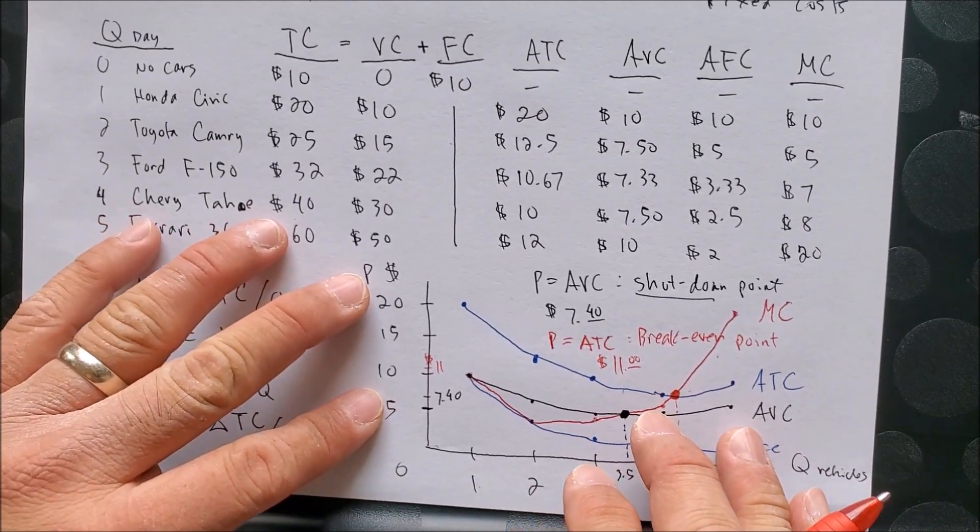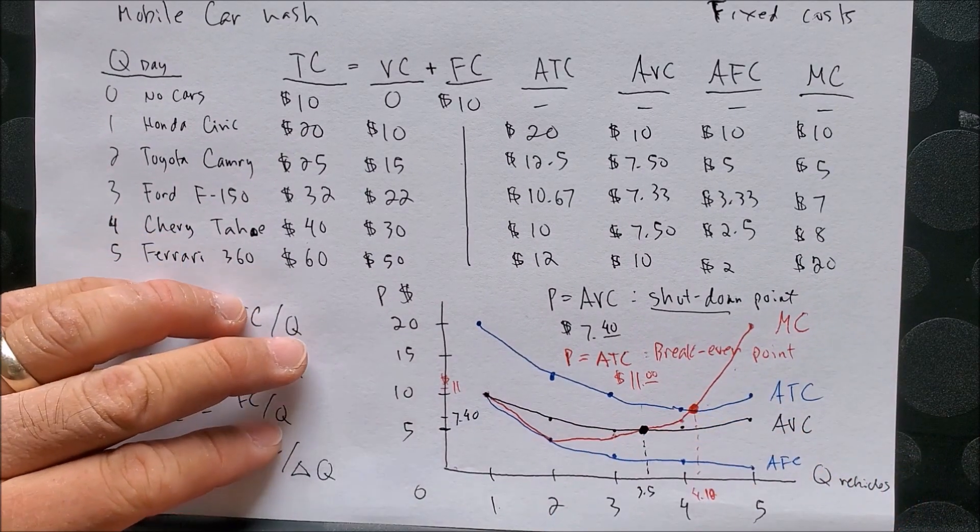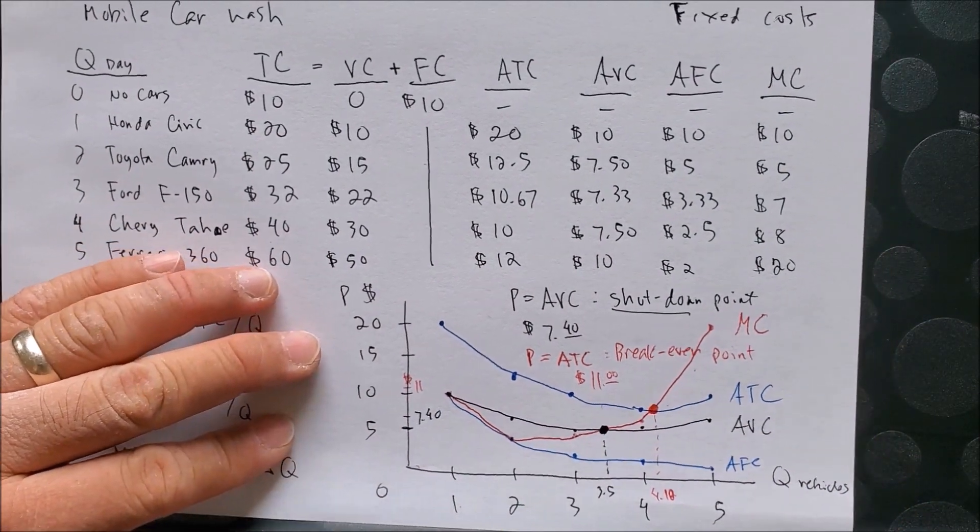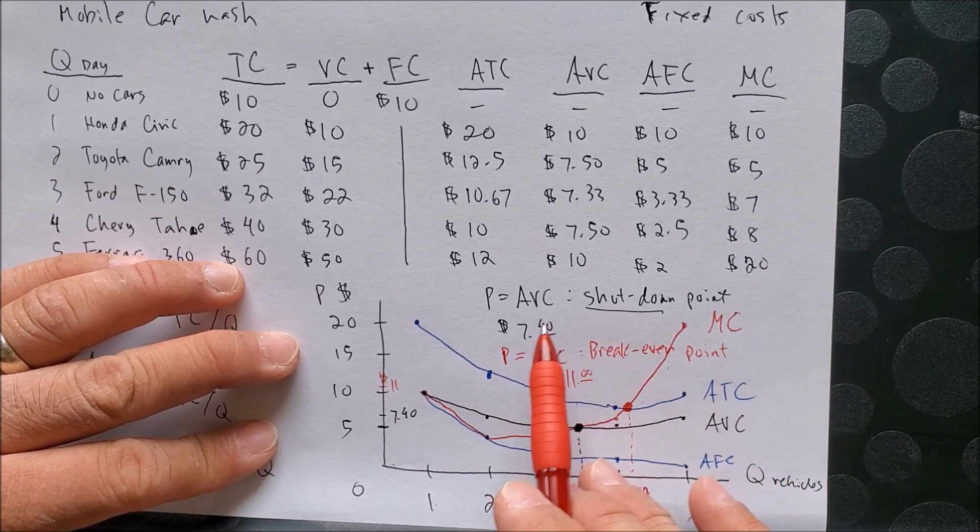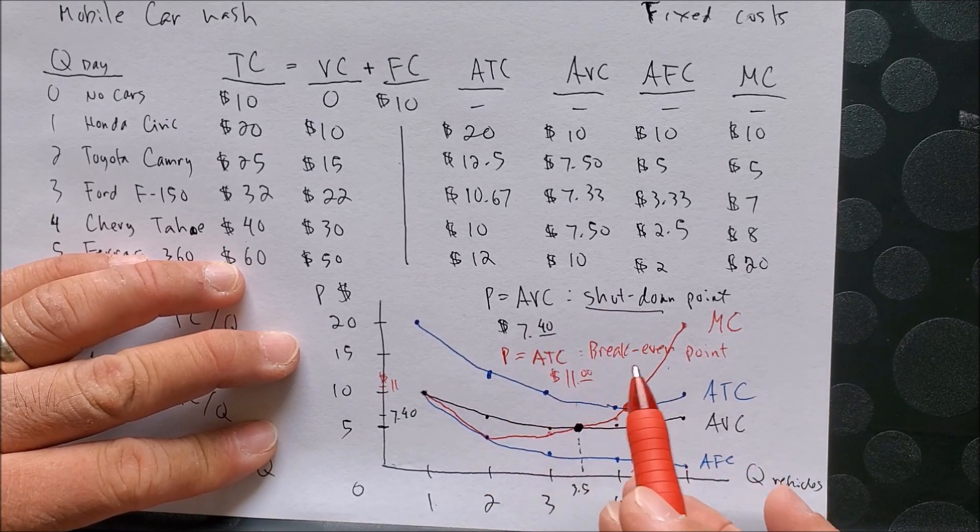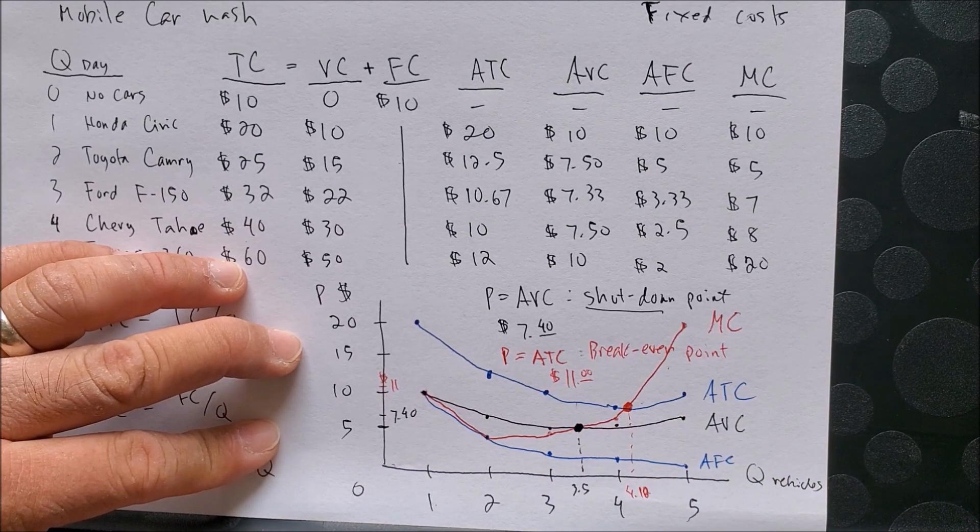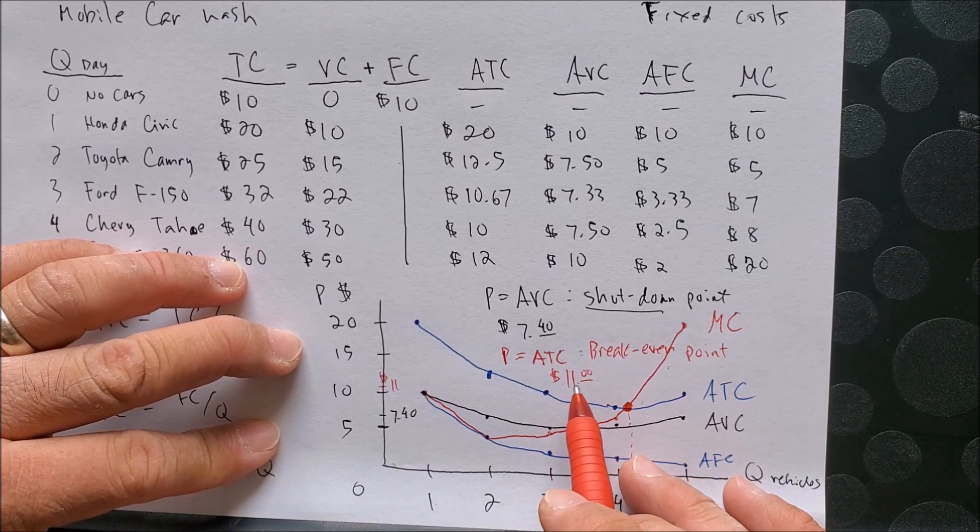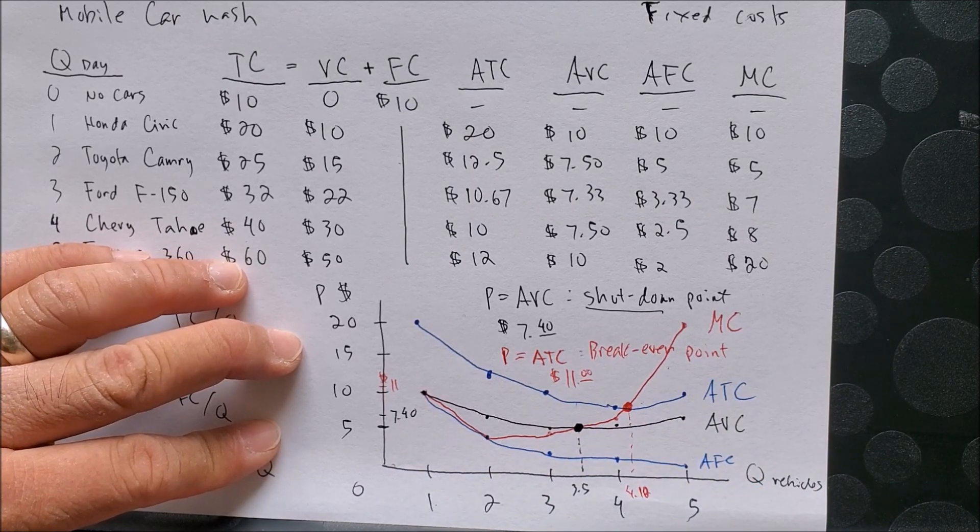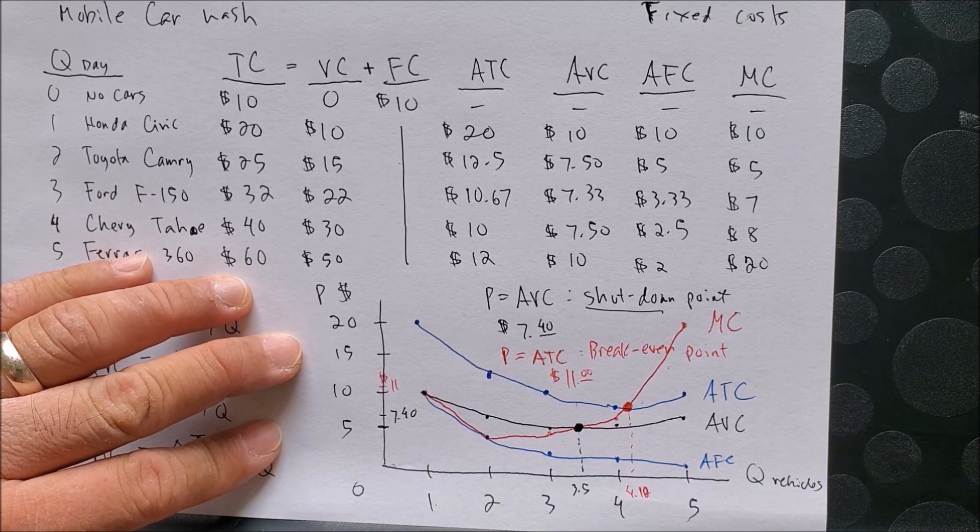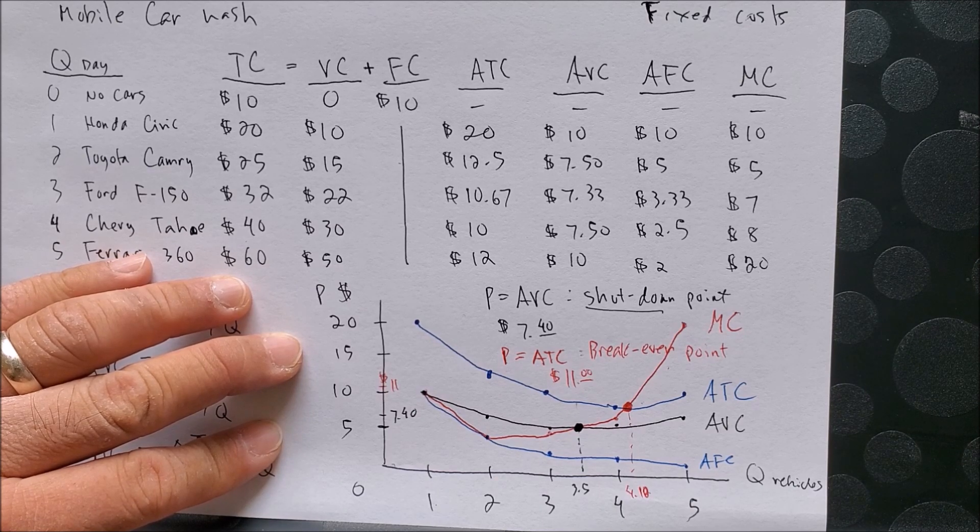So here is a good example, a very simple example of how a small business, in this case a mobile car wash, can be able to know exactly how to operate its business and what points to avoid, what price to avoid from shutting down, $7.40, and what price to maybe meet to break even. But usually we tend to say that businesses would want to maximize profit. So in this case, you don't want to charge less than $11 per vehicle. You want to charge maybe more. So this can kind of explain as to why the type of vehicle you're going to wash, depending on the size, depending on the make, depending on the model, might increase in price. And this is cost of production.